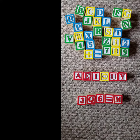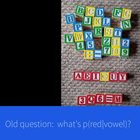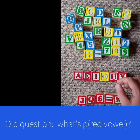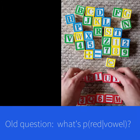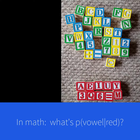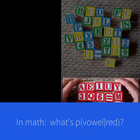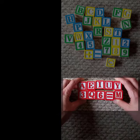Let's ask a slightly different conditional probability question. We just considered what's the probability that you get red if you know you have a vowel — given that there's a vowel, what's the probability of red? Now let's flip it: given that you have something that's red, you know that it's red — what's the probability it's a vowel? Basically, you're restricting your sample space to only these 10 red blocks.